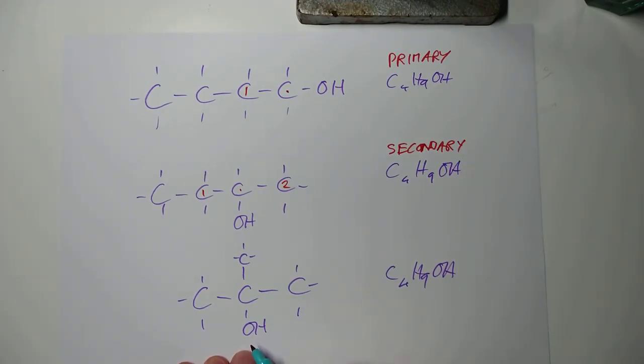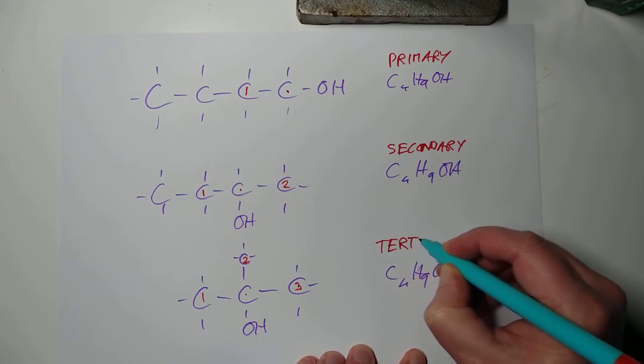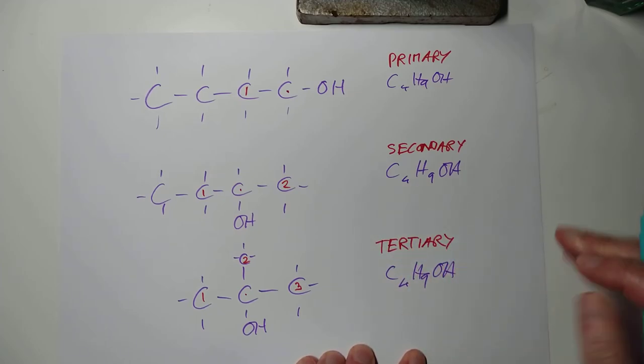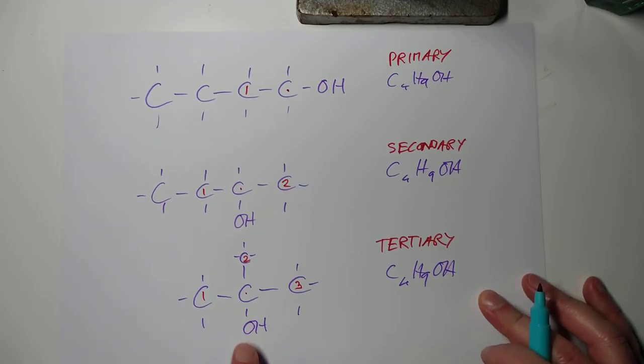And you can pause the video and work out yourself for this one here. Here, the hydroxyl is attached to this carbon, which is attached to one, two, three. These are tertiary alcohols. This is a new classification system depending on where the OH is and what is attached to the carbon round about this OH.